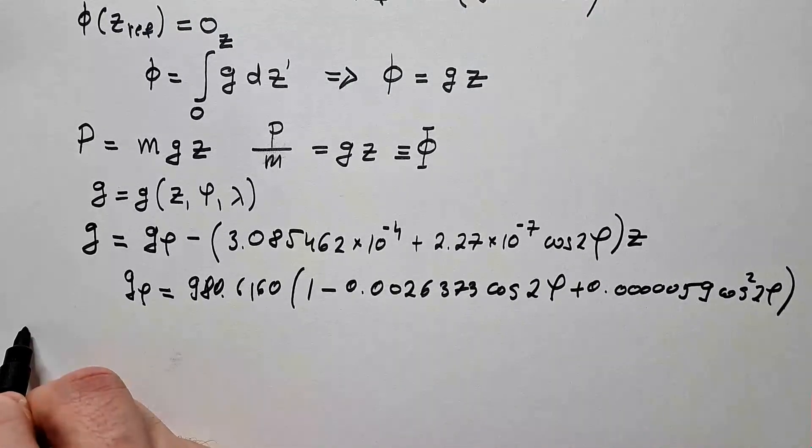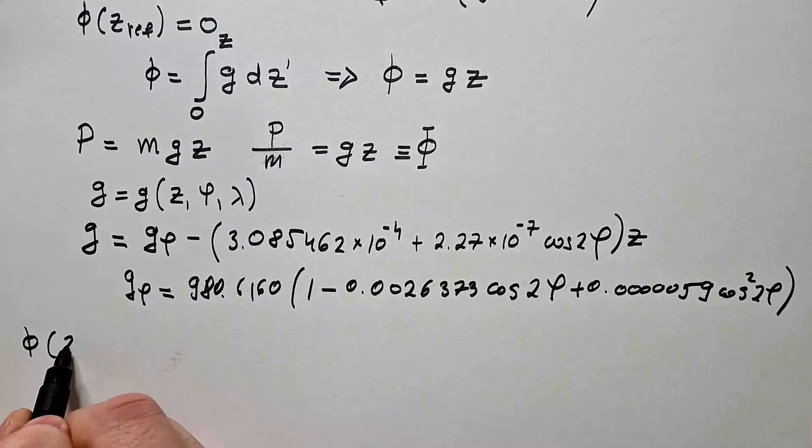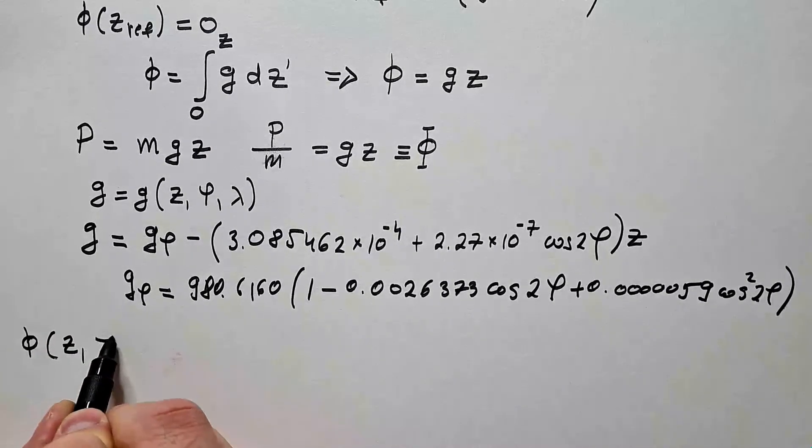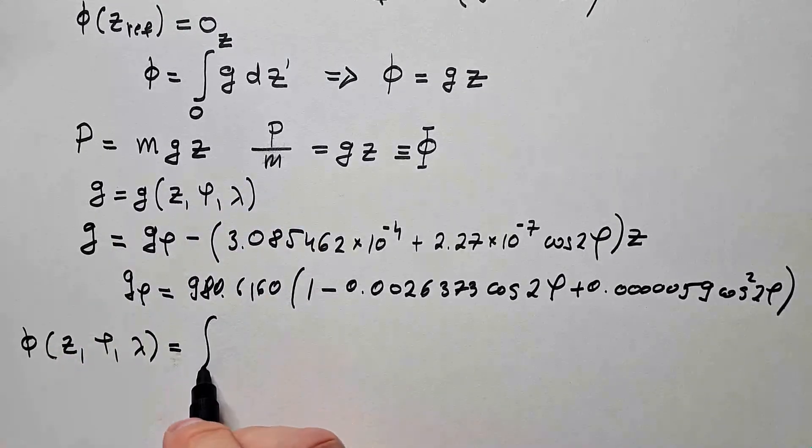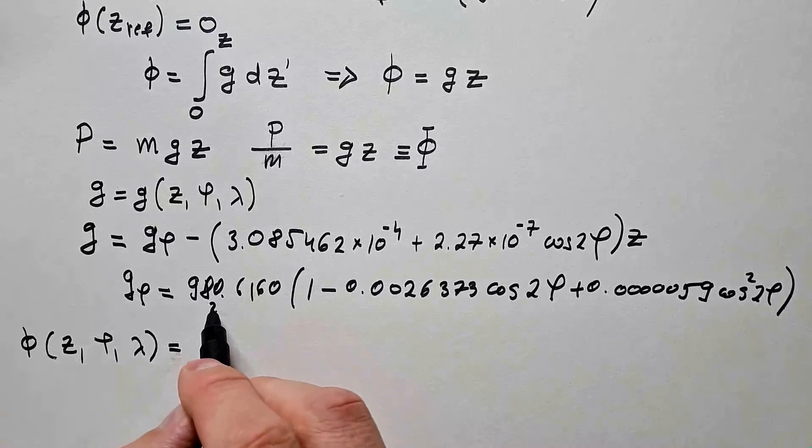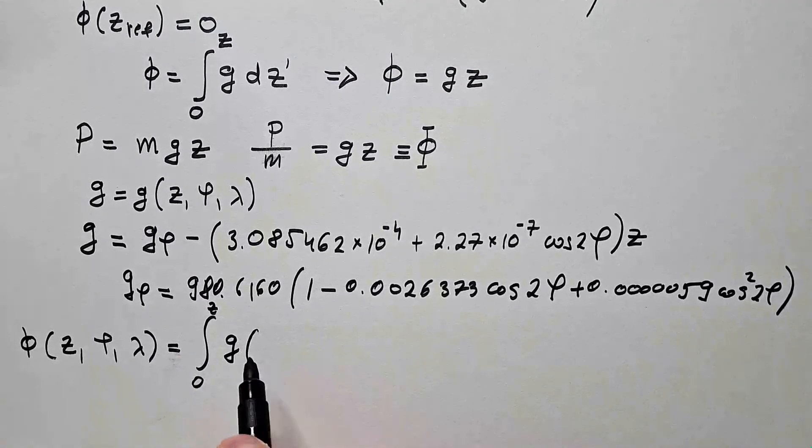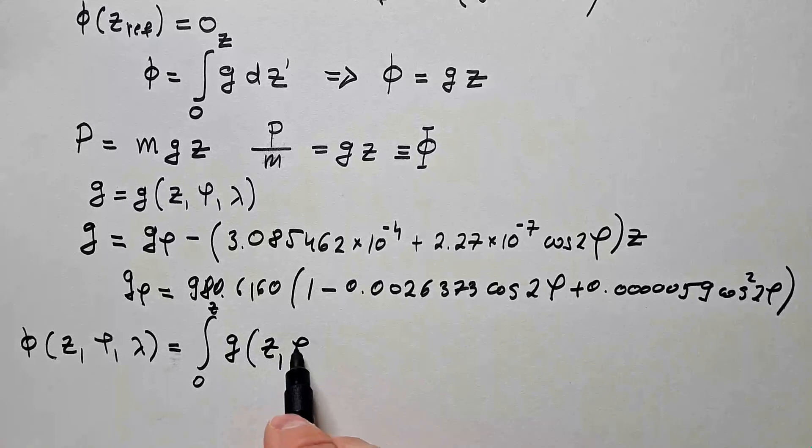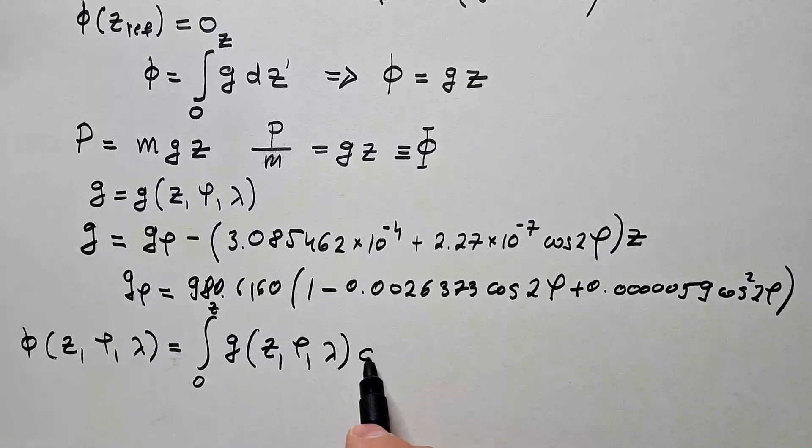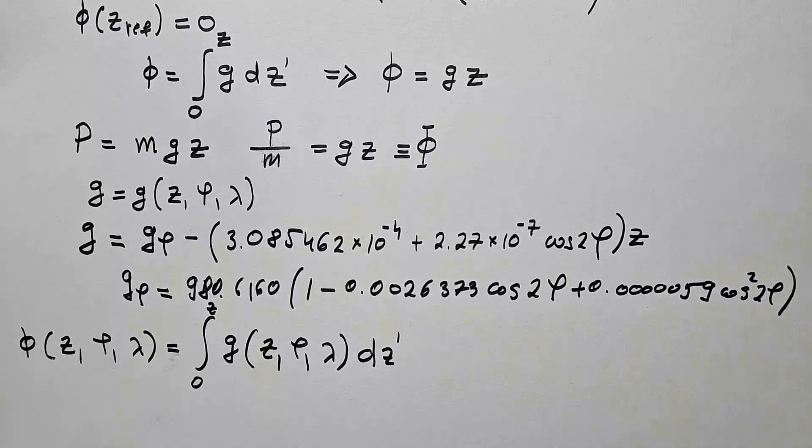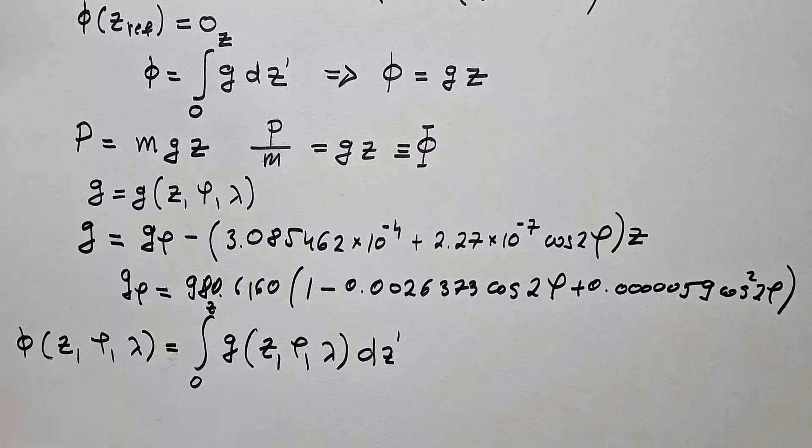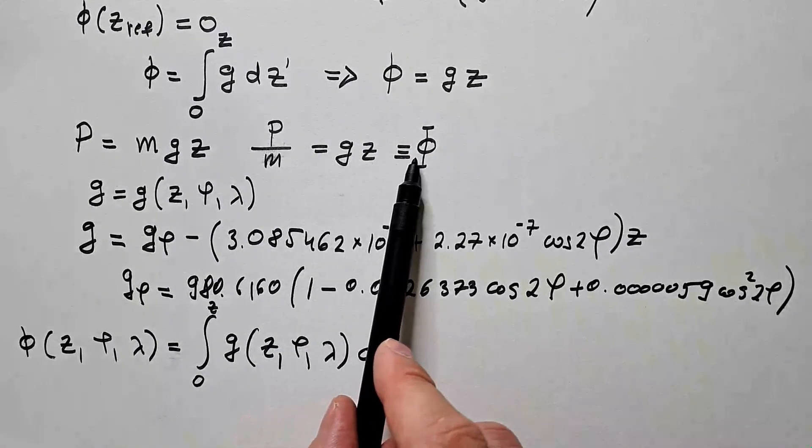Considering this whole discussion then we can see that geopotential is really function of height latitude longitude and this expression can be more formally written as integral 0 to z, g(z, phi, lambda) times dz prime. And assuming that earth is the perfect sphere I will solve this integral in the next video. For now we will leave it as it is.